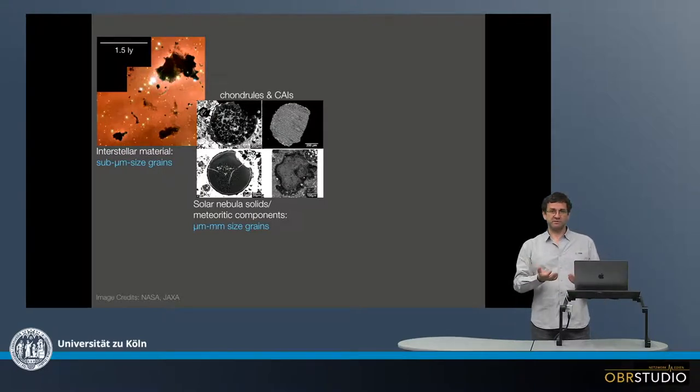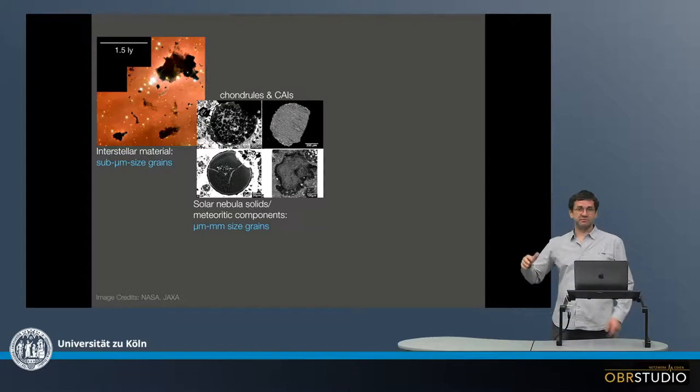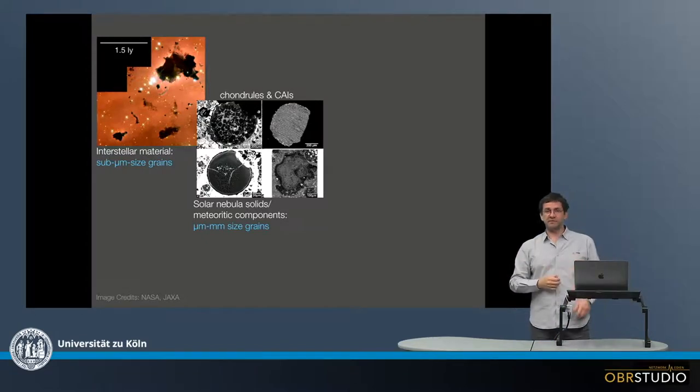And this larger material is now found in meteorites, and this is chondrules and matrix primarily, because these two together make up maybe 95 or more volume percent of a meteorite.